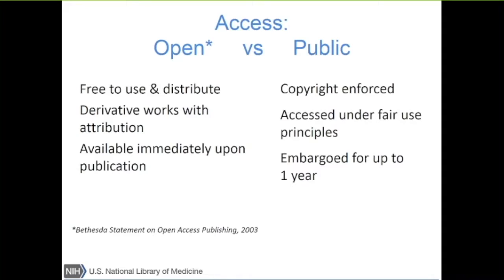The policy is a public access policy, not open access. People get confused about the difference. With open access, users are free to use and distribute these articles on their own servers, can make derivative works, and the key factor is that it's available immediately upon publication — that's the gold standard for open access. For public access, copyright is still owned by the journal itself. You can't download all the articles from PubMed Central and put up your own server to distribute them. Also, there is this embargo clause where a journal can request the article be embargoed for up to a year.